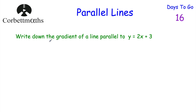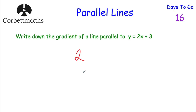Okay, let's have a look at our next question. The next question says: write down the gradient of a line that is parallel to y equals 2x plus 3. So we're looking for the gradient of a line that's parallel to y equals 2x plus 3. Feel free to press pause and write it down. The gradient of this line is 2, so the gradient of any line parallel to it would also be 2, because it has to have the same gradient. And if you got that, well done.